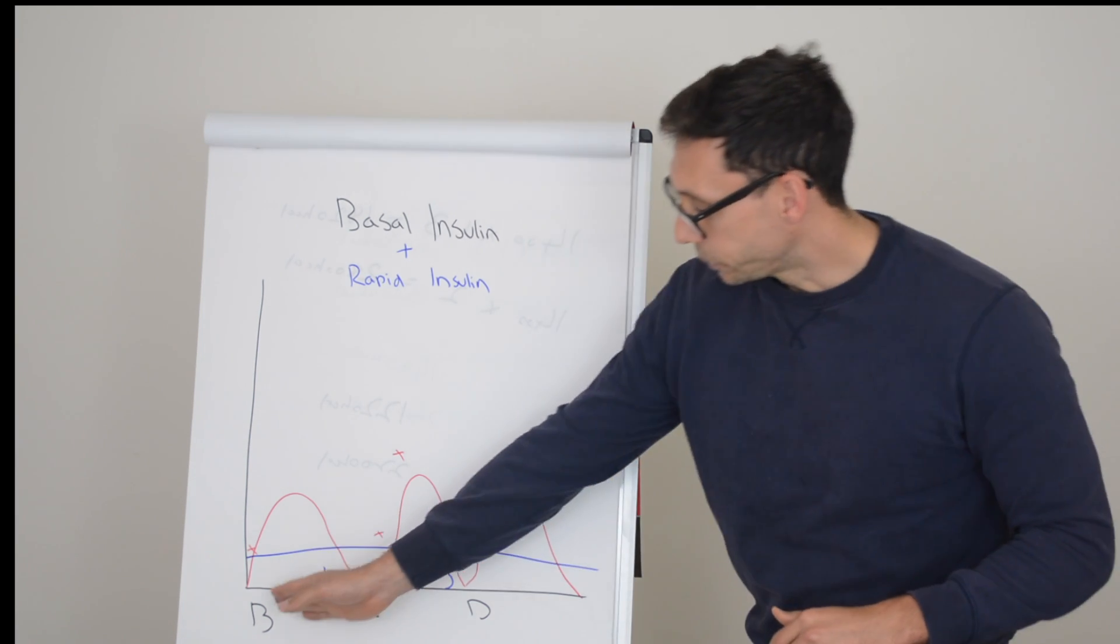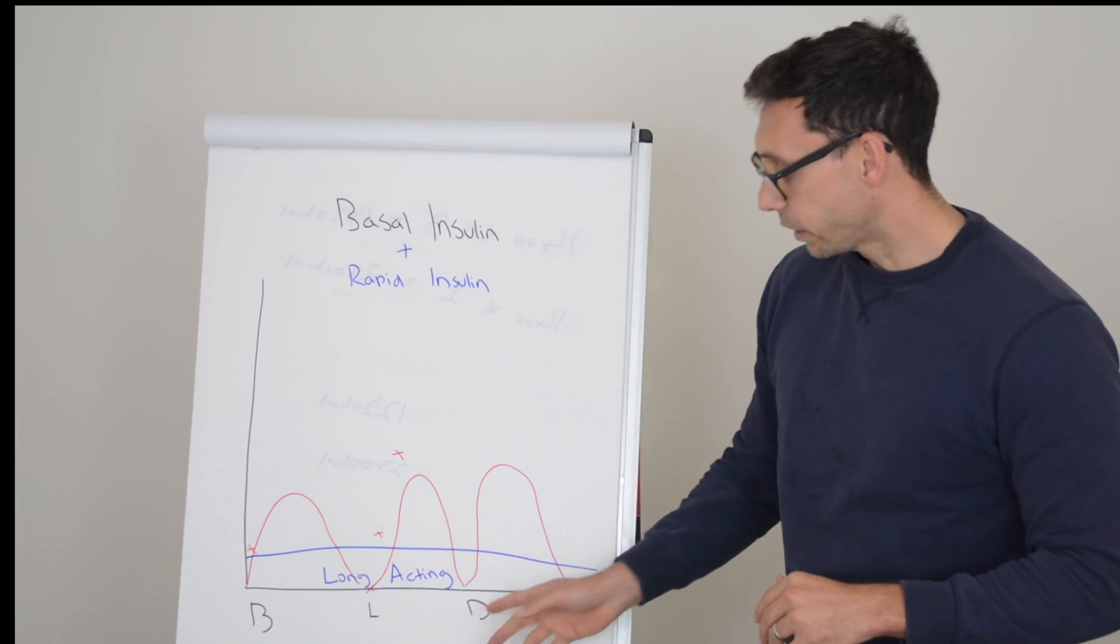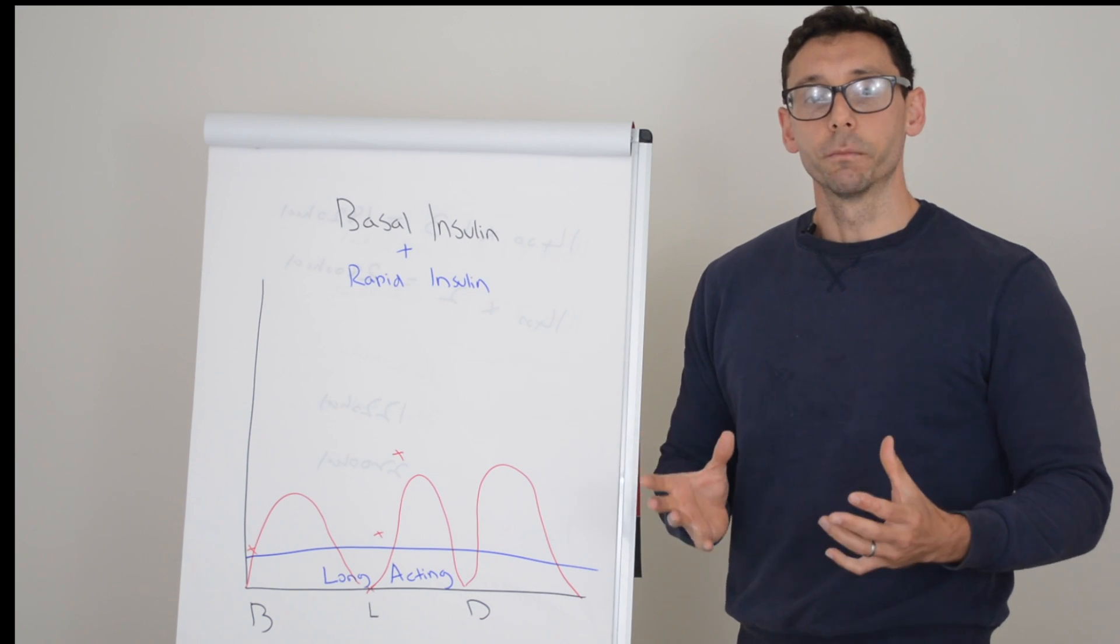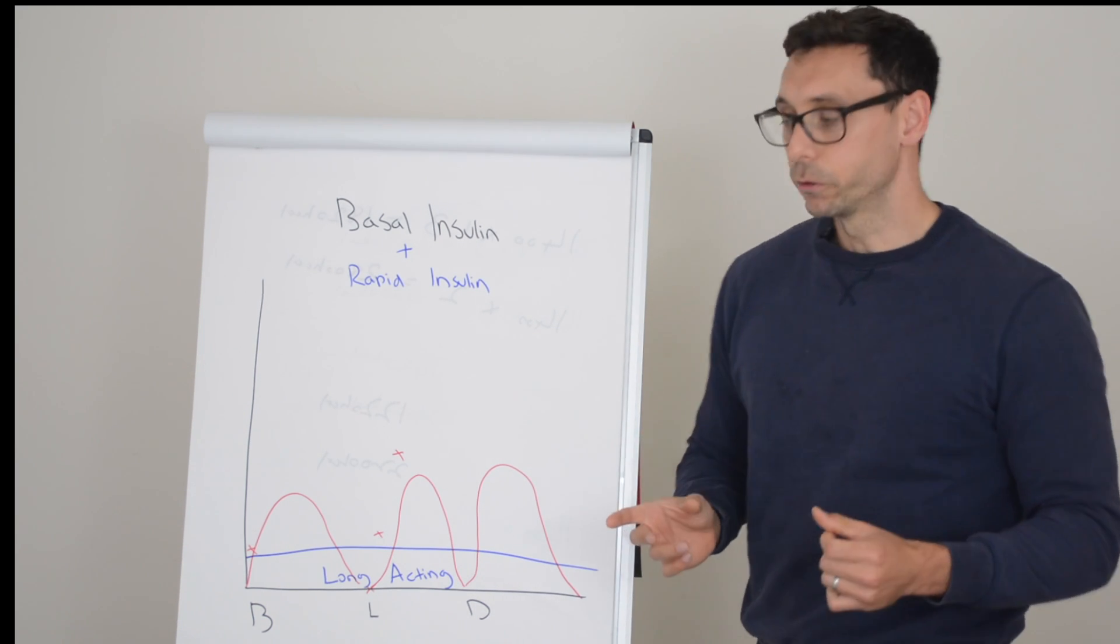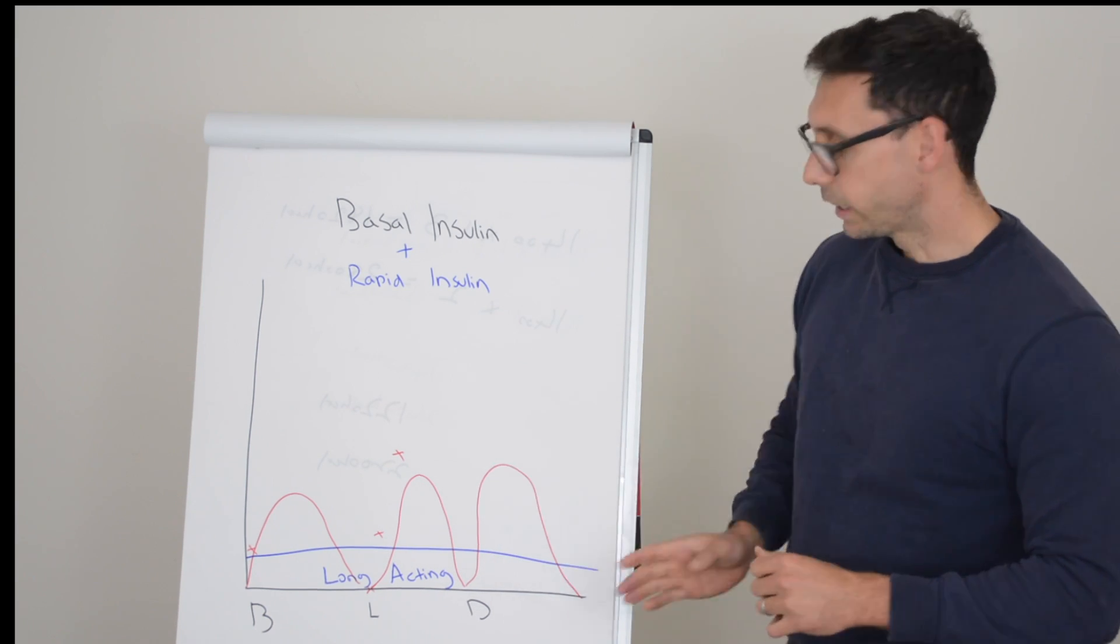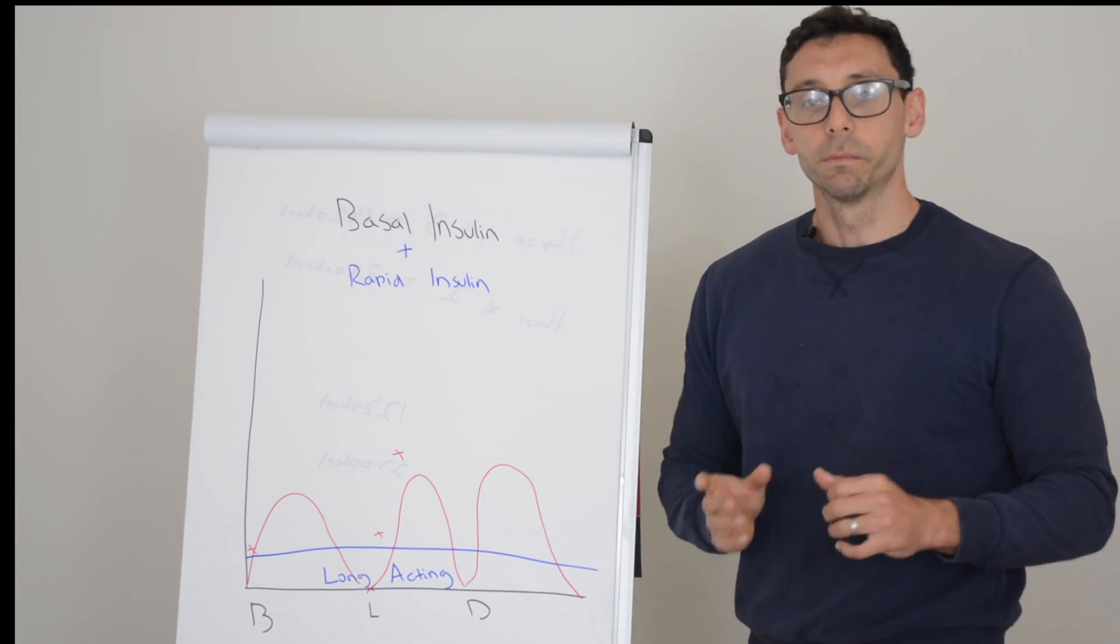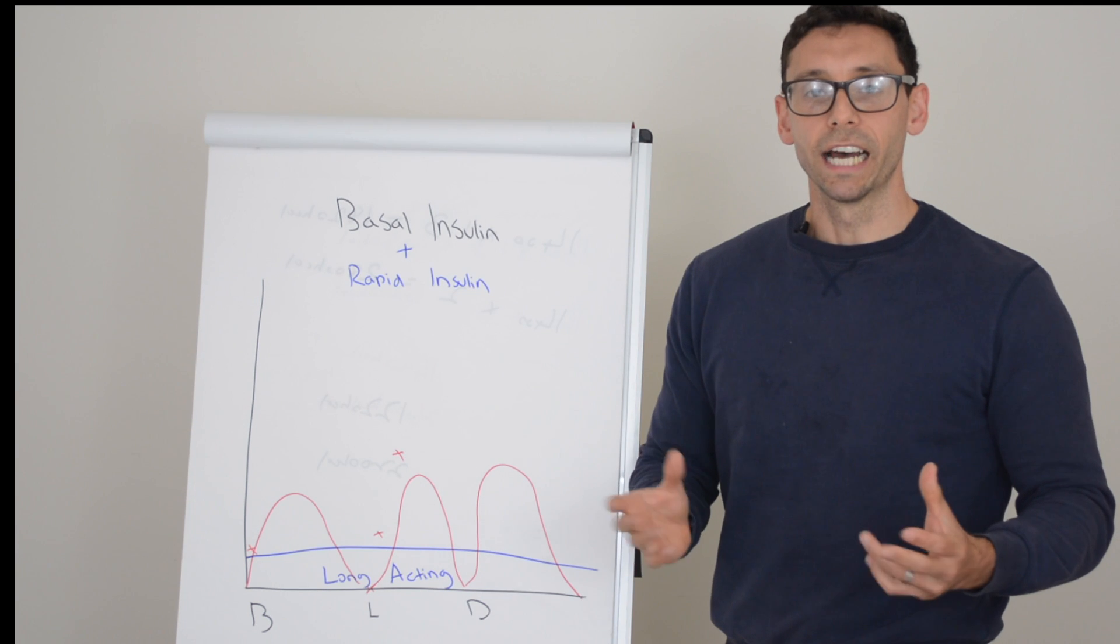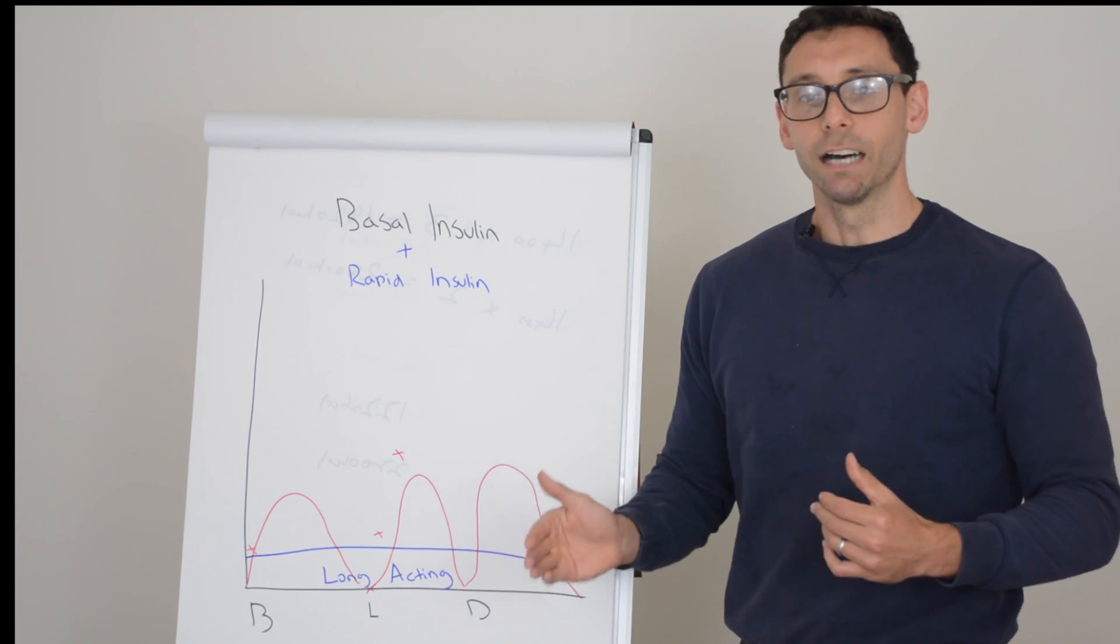Then as you eat your meals - breakfast, lunch, dinner - assuming you're having a significant amount of carbohydrate, you need to take your rapid acting insulin. Rapid acting insulin lasts about four and a half hours, which is why it's called rapid acting because it's in and it's out.